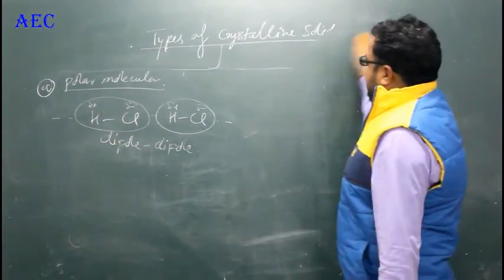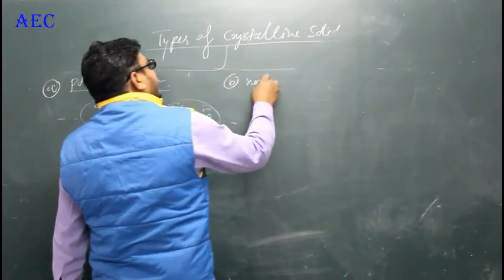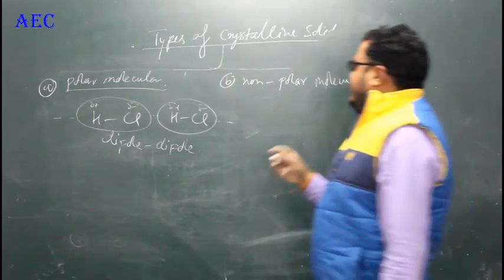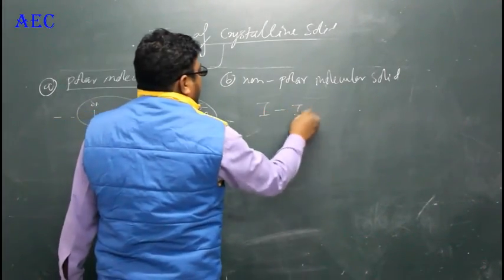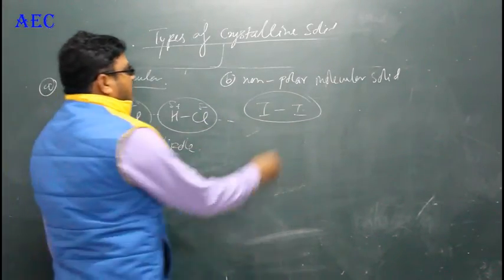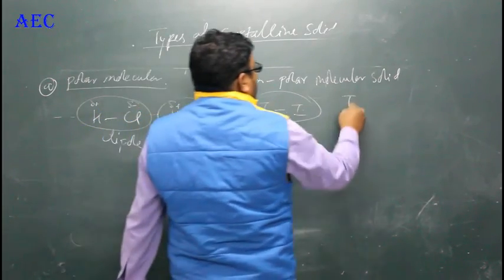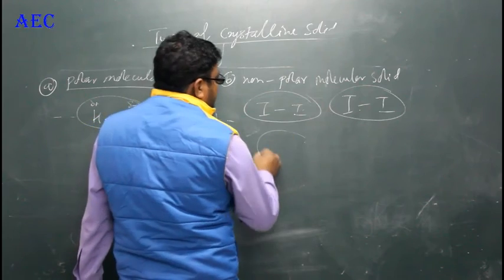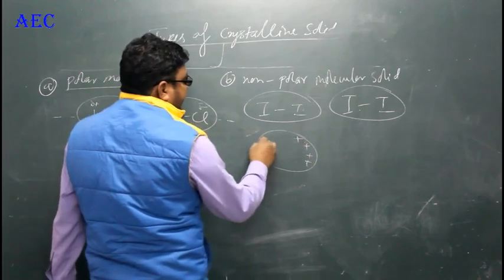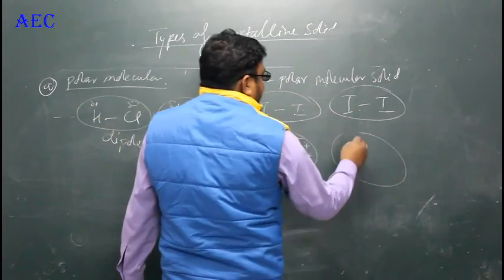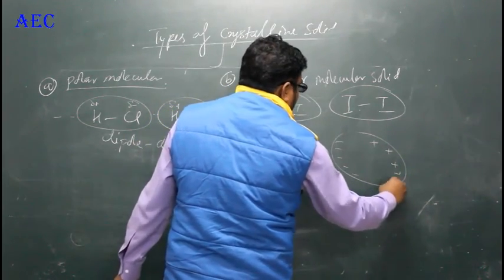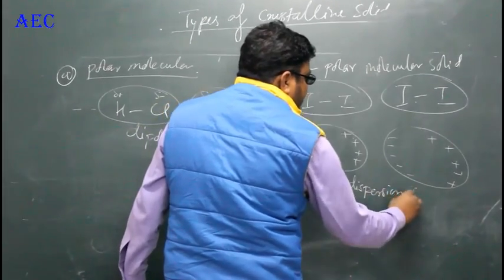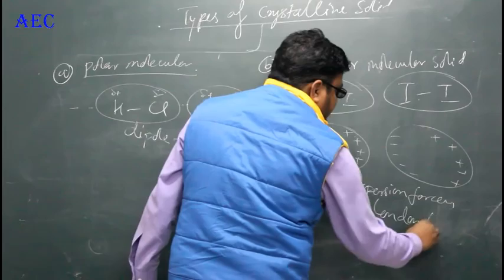The second type is non-polar molecular solid, consisting of non-polar molecules such as iodine. Iodine has no electronegativity difference, so no positive or negative part is permanently formed — it stays neutral. When two such molecules interact, electrons disperse — positive part to one side and negative to the other — and the force of attraction is called dispersion forces, also known as London forces.